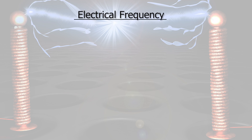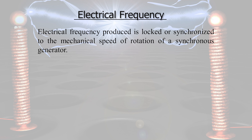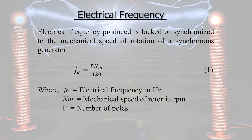Electrical frequency: the electrical frequency produced is synchronized to the mechanical speed of rotation of the synchronous generator. Nm is the mechanical speed of rotor in RPM, and FE is the electrical frequency in hertz. FE is directly proportional to Nm, the rotor speed. P is the number of poles. The frequency is linked or synchronized with the speed of the rotor — that is why the name is given as synchronous machines.